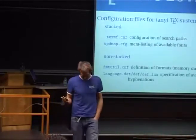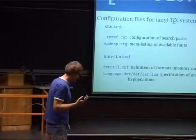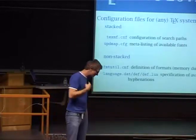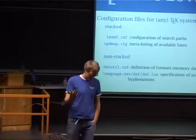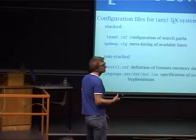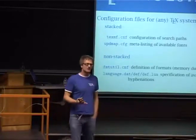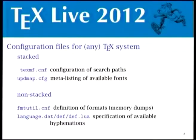For distributors there are practically four files — or groups of files — that have to be taken care of. These are the central configuration files. The first one, which most people have heard of, is texmf.cnf — the general configuration file. Normally not many things have to be changed. Since 2012 this is stacked, so the TeX programs read all the texmf.cnf files and evaluate them in the proper way.